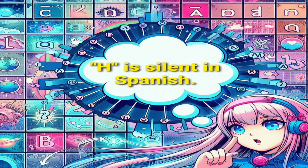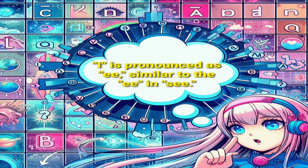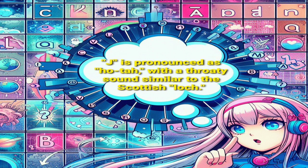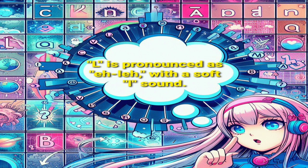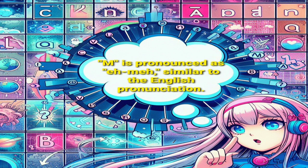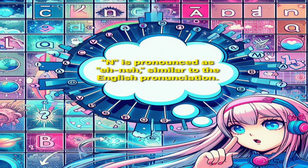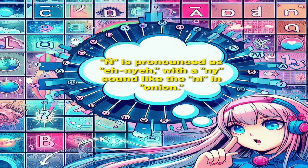H is silent in Spanish. I is pronounced as 'ee', similar to the e in see. J is pronounced as 'jota', with a throaty sound similar to the Scottish loch. K is pronounced as 'ca', similar to the English pronunciation. L is pronounced as 'ele', with a soft l sound. M is pronounced as 'eme', similar to the English pronunciation. N is pronounced as 'ene', similar to the English pronunciation. Ñ is pronounced as 'eñe', with a ny sound like the ni in onion.